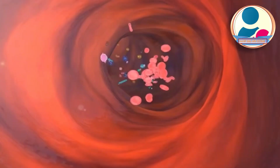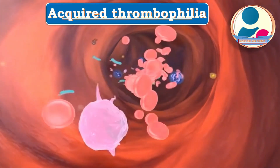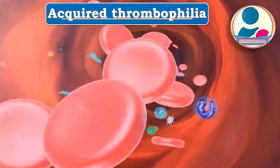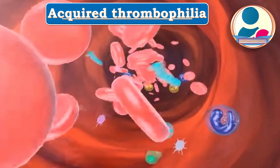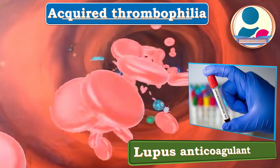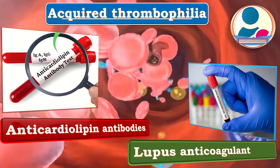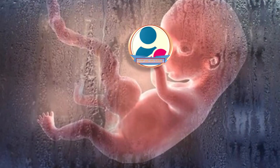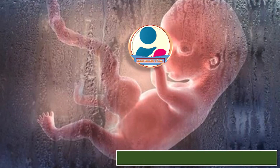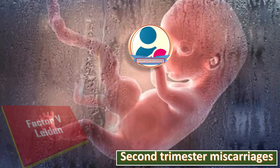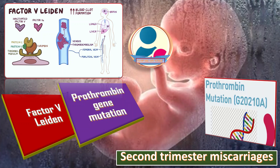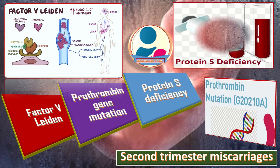Women with recurrent miscarriages should be offered testing for acquired thrombophilia, particularly lupus anticoagulant and anticardiolipin antibodies, prior to pregnancy. Women with second trimester miscarriage may be offered testing for factor V Leiden, prothrombin gene mutation, and protein S deficiency, ideally within a research context.